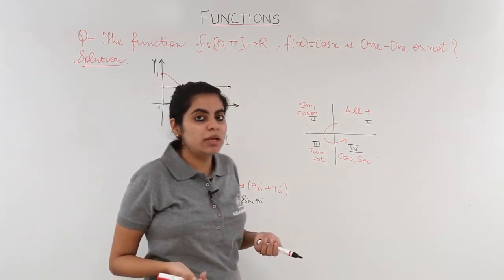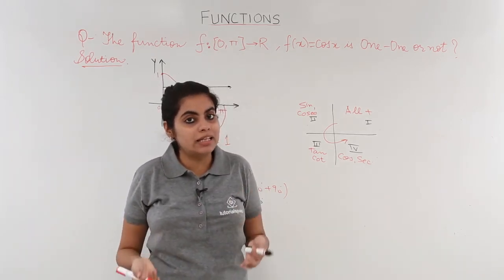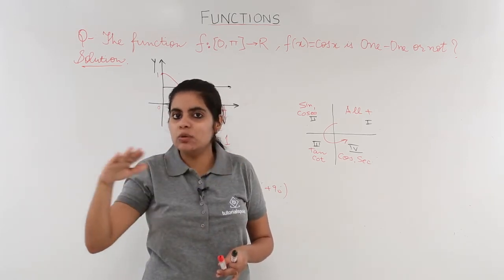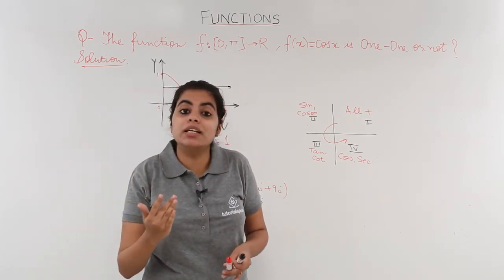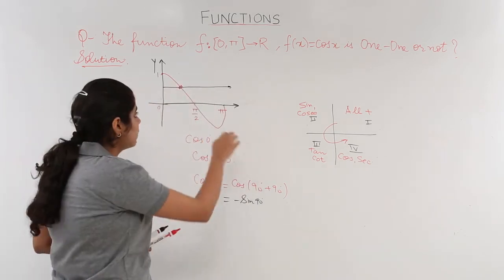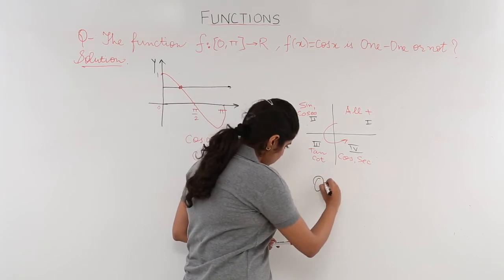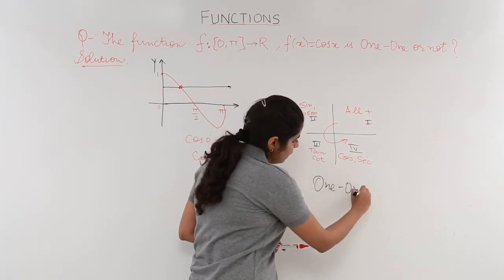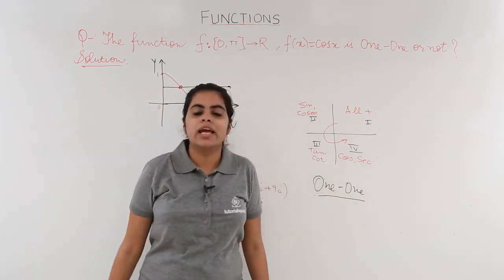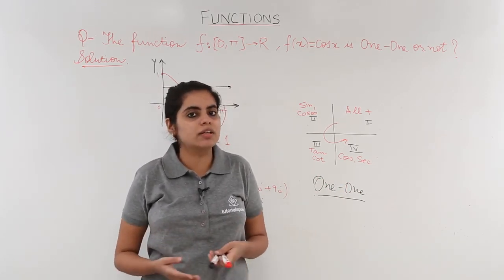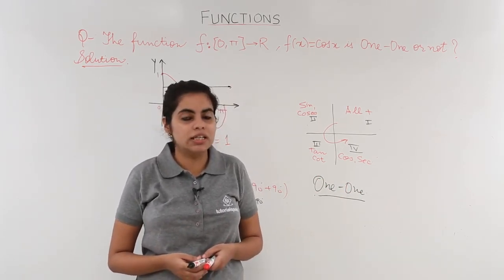Since in graphical method we understood that the technique is to draw the graph, then draw a line parallel to the x-axis, and if it cuts the graph at only one point, it is one-to-one. So this function is a one-to-one function. Hence in this video we studied with the help of a problem how to check whether a graph is one-to-one or not using the graphical method. Let's see you later. Thank you.